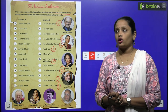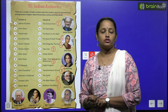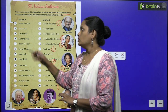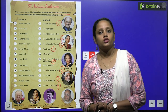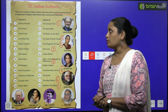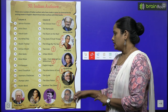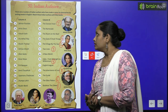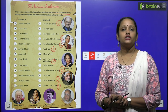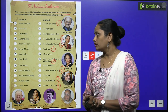Match these Indian authors with their books — Indian authors ko unke books ke saath match karna hai. So here you can see there are two columns, column A and column B. The first one is Salman Rushdie, and he has written the book Shalimar the Clown.